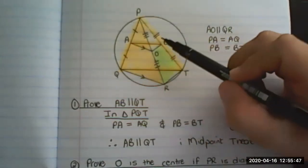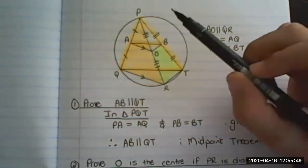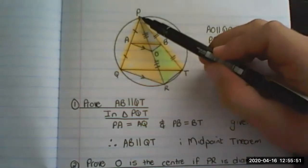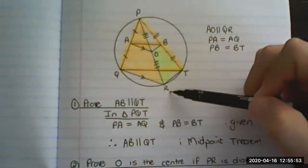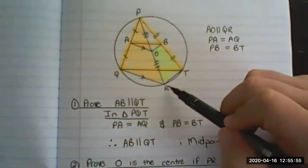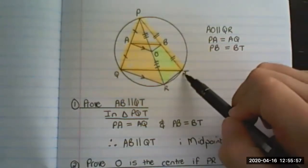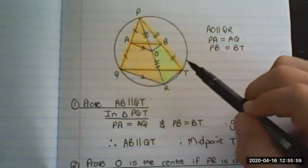So we already have PB equal to BT and we have PO equal to RT. Therefore, OB is parallel to RT, midpoint theorem. And therefore, that is a parallelogram.